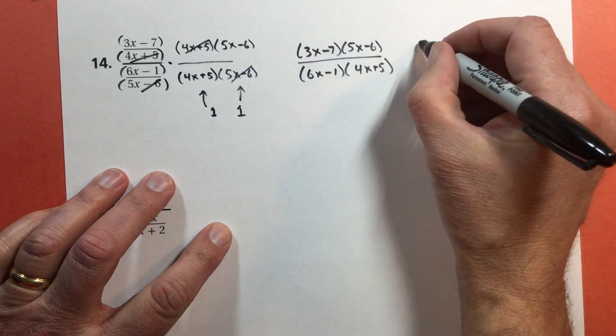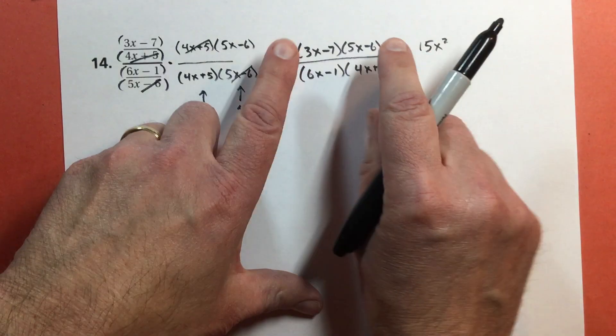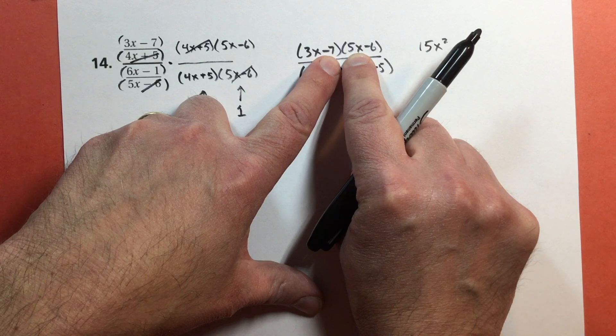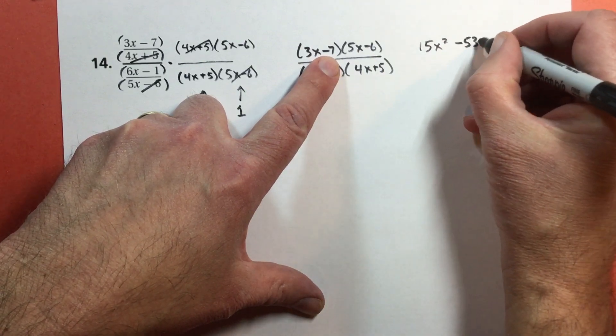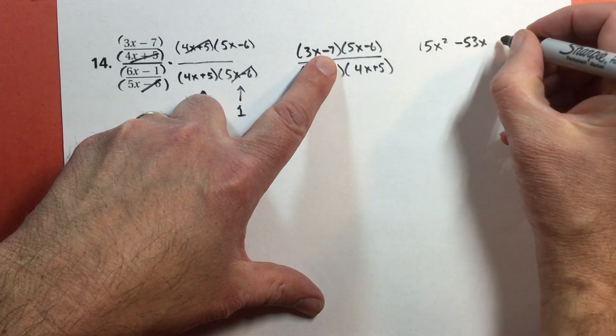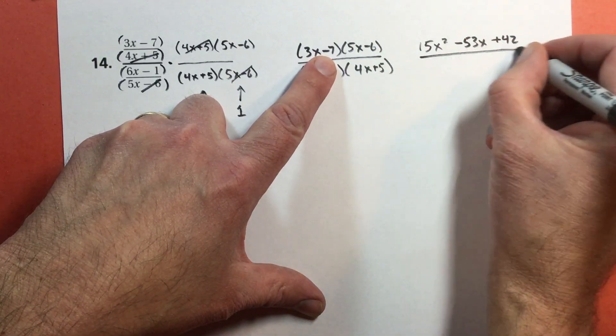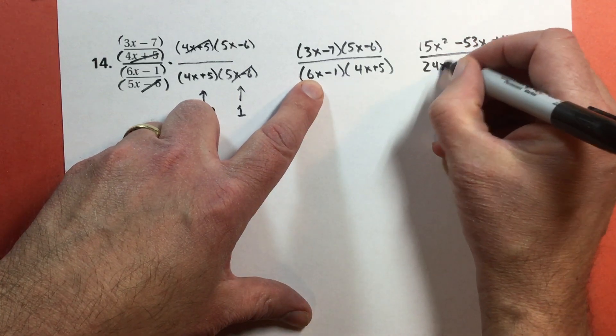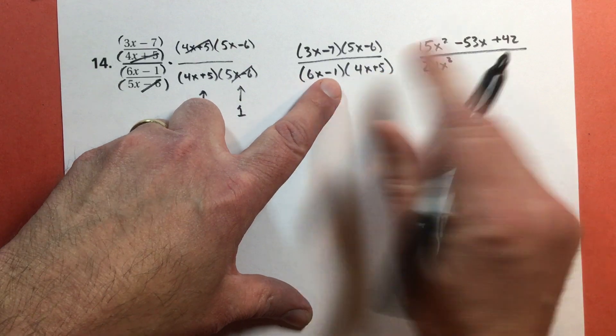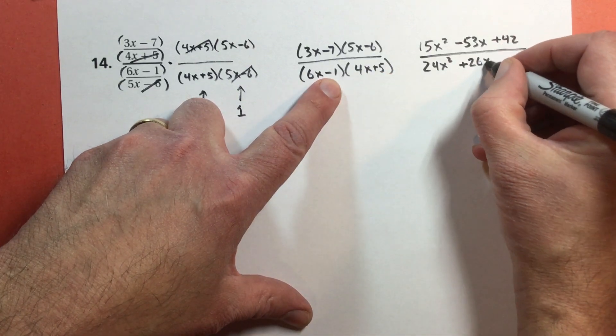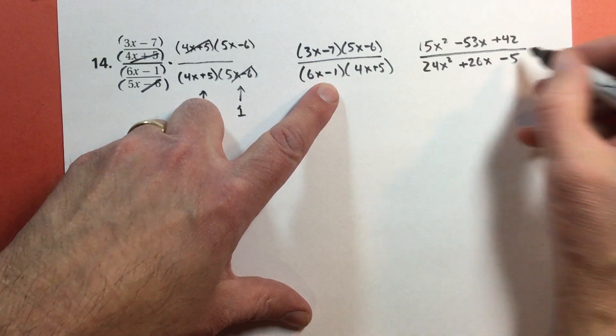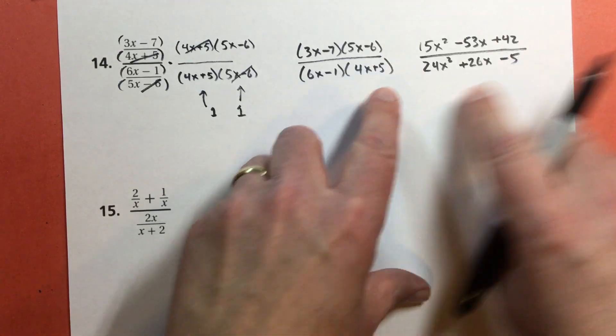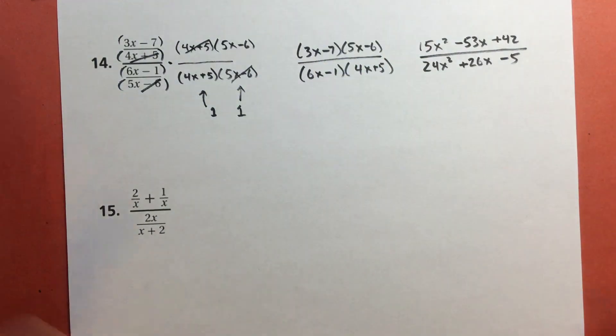Let's multiply. 5x times 3x is 15x squared. Negative 18 subtract 35, that'd be negative 53, I think. 53x. Somebody check me on that one. Negative 7 times negative 6 is positive 42. And 6x times 4x is 24x squared. 30 subtract 4 is going to be 26x, and then negative 5. And of course, the first thing I would think about is, can I reduce it? No. You've already got a factor right here. Nothing reduced. So that's good.